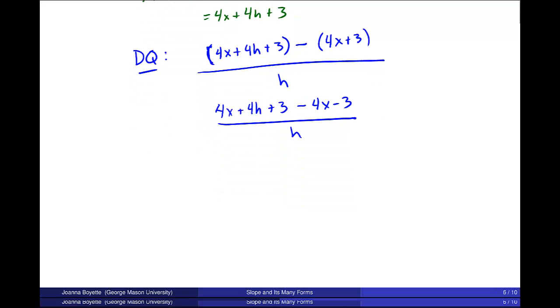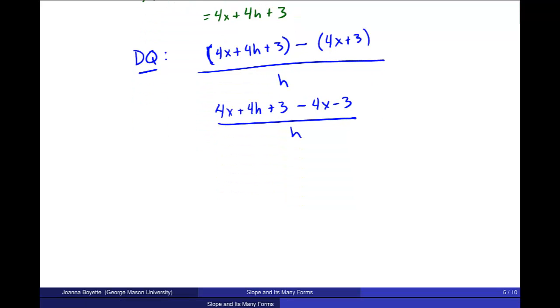I'm going to get a little bit more room, and then we're going to simplify this. Your 4x is, if you see, I have a 4x and a minus 4x. And I have a 3 minus 3. So those will cancel. I'll be left with 4h divided by h. h is a factor in both numerator and denominator. And the difference quotient is just 4 in this particular problem.